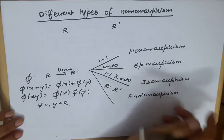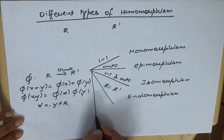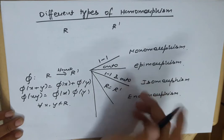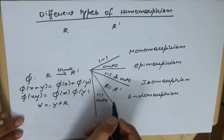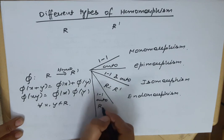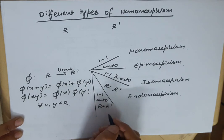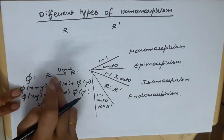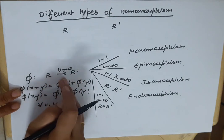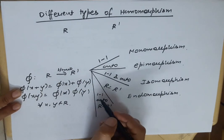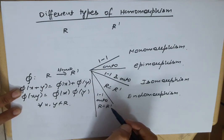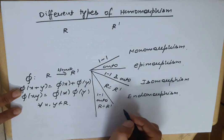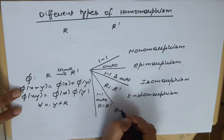The next criterion is: if we have a mapping that is 1-1 and onto, and R is equal to R', and with that the mapping is a homomorphism — so all together it is 1-1, onto, and R equals R' — in this case we call it automorphism.